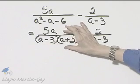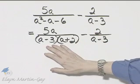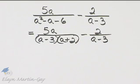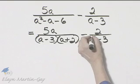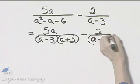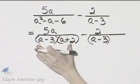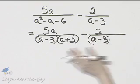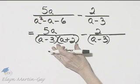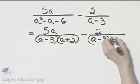So I want to rewrite each fraction so that it has this denominator. Now obviously this fraction already has this denominator. Let's go ahead and look at this rational expression. What would I multiply the denominator by so that this denominator looks like this denominator? I would multiply this denominator by A plus two.